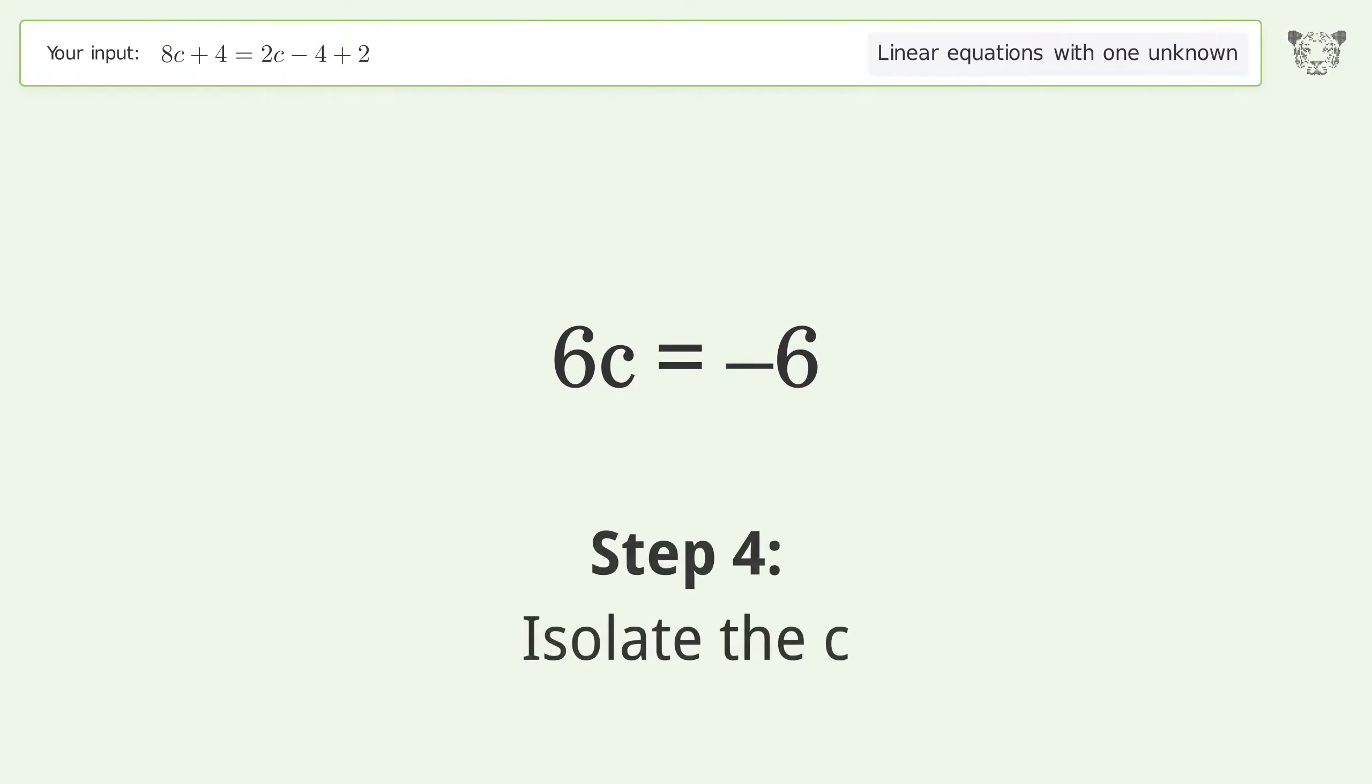Isolate the c by dividing both sides by 6. Simplify the fraction. And so the final result is c equals negative one.